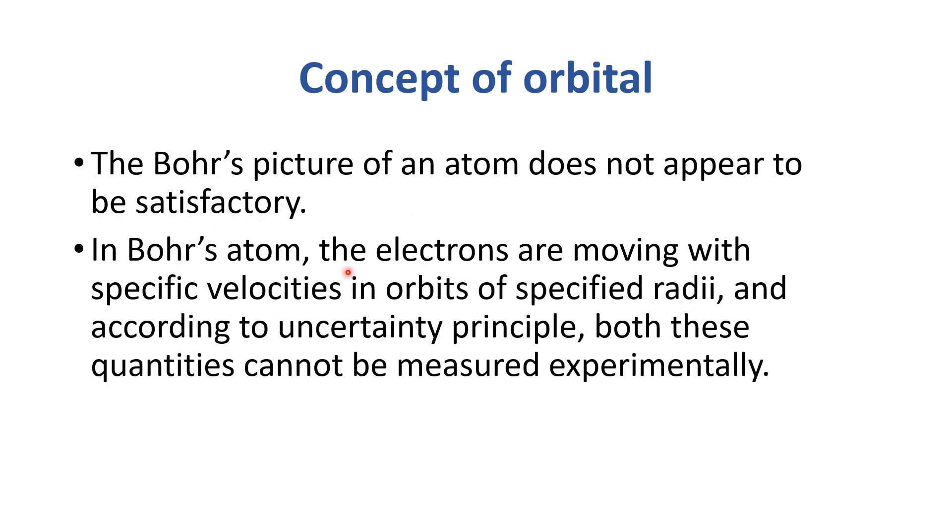In Bohr's atom, the electrons are moving with specific velocities in orbits of specified radii, and according to uncertainty principle, both these quantities cannot be measured experimentally.